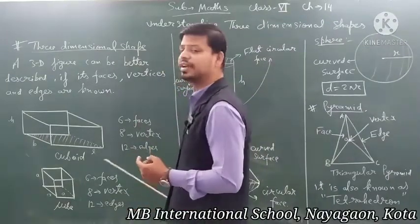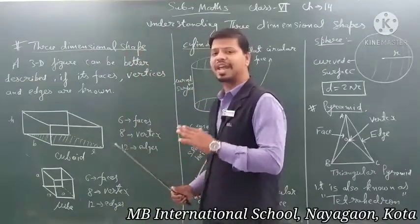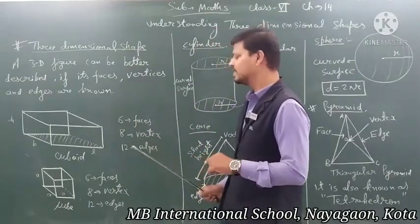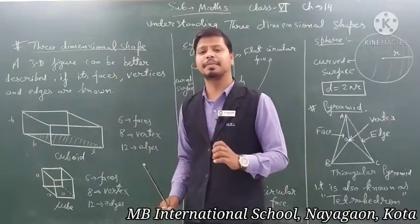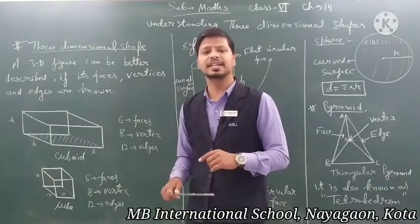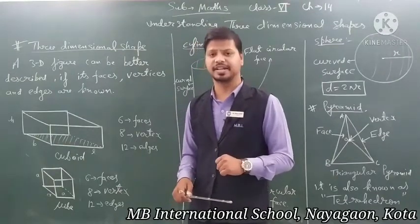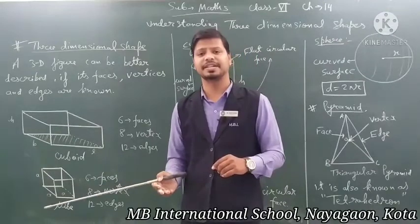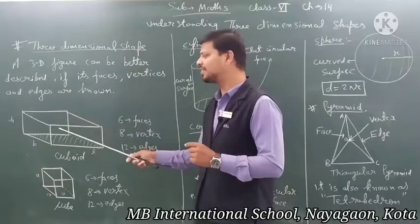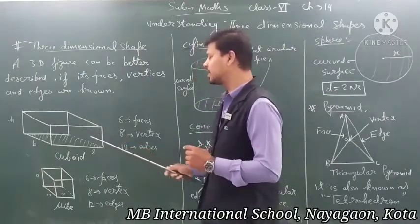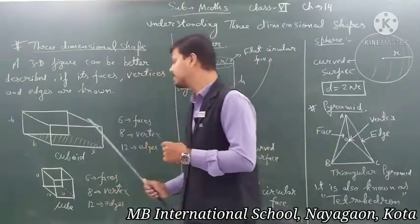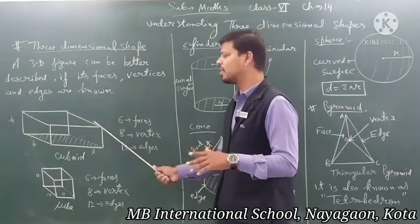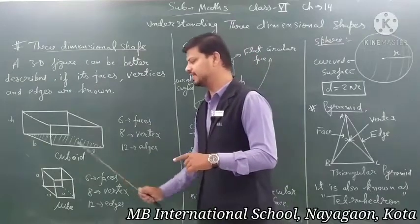Now for the definitions: a face is a flat surface of a 3D figure. A vertex is the point where three flat surfaces meet — it is the corner. Edges are where two flat surfaces meet — the lines. A cuboid has 6 faces, 8 vertices, and 12 edges. In short: faces are flat surfaces, vertices are corners, and edges are lines.